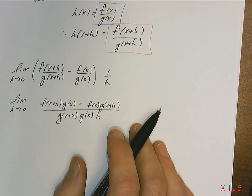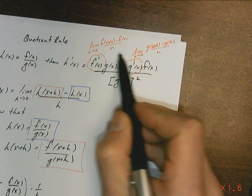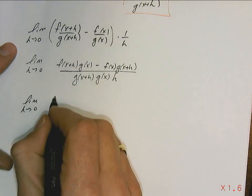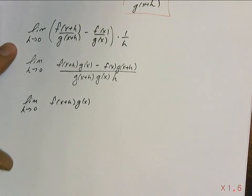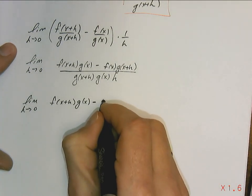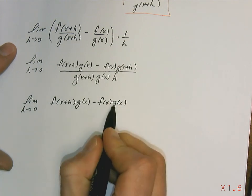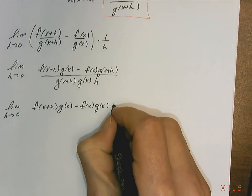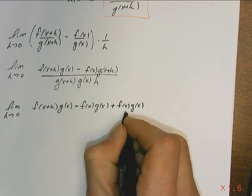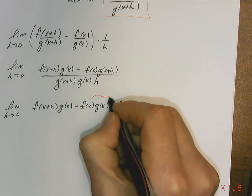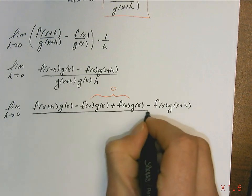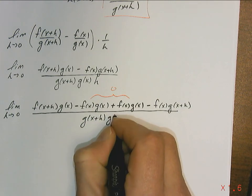Remember what I want — I want to get an f of x plus h minus f of x over h, and I want to get a g of x plus h minus g of x over h. I really wish I had a negative f of x g of x term, because I can factor out g of x and be left with f of x plus h minus f of x. To do that without changing anything, I'm going to add and subtract f of x g of x — effectively adding zero between the two terms — leaving everything over g of x plus h times g of x times h.